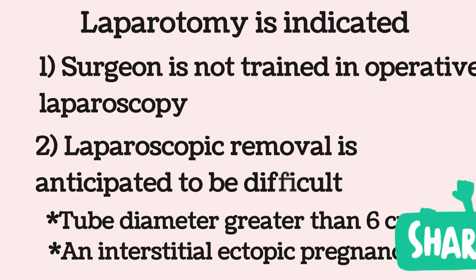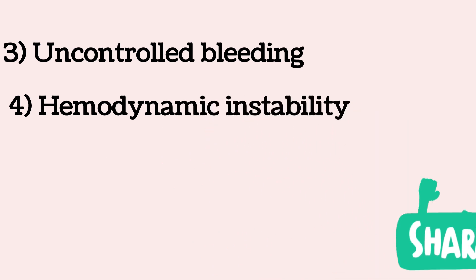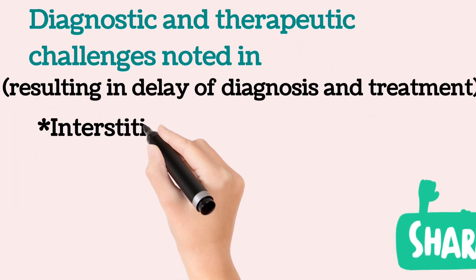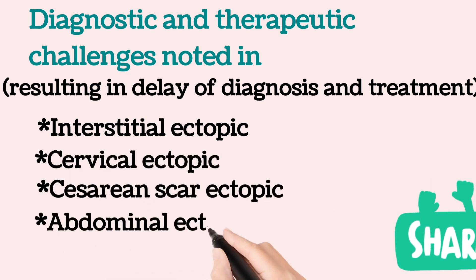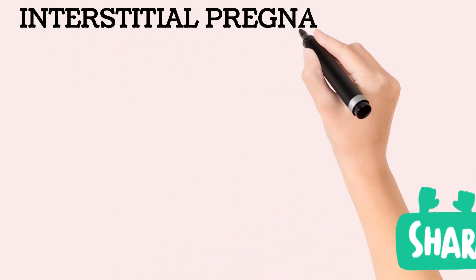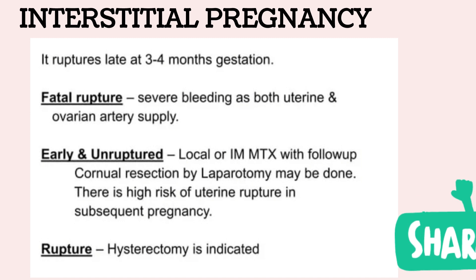Laparotomy should be performed if there is hemodynamic instability. These cases often require a partial or total salpingectomy. Interstitial, cervical, caesarean scar, and abdominal ectopic pregnancies as well as early placenta accreta may present significant diagnostic and therapeutic challenges resulting in delayed diagnosis and treatment. Interstitial pregnancy often goes unrecognized and may manifest as uterine wall rupture, massive hemorrhage, and shock.